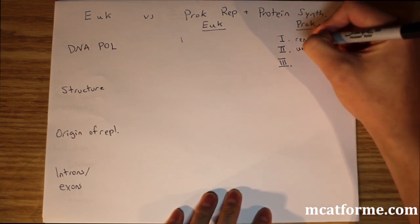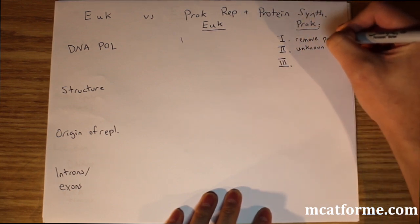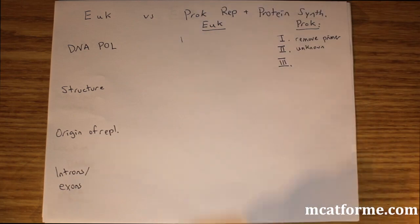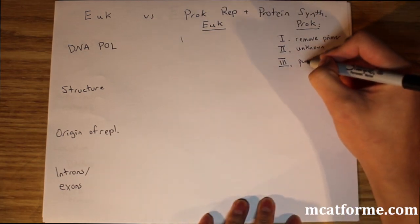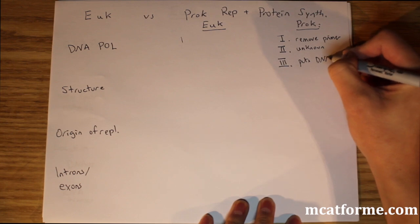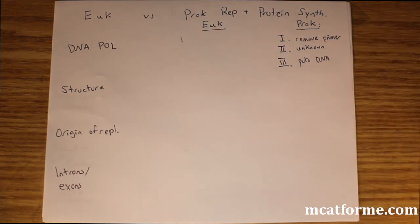DNA polymerase I removes primers, and DNA polymerase III puts down the DNA. It lays the track down and does the basic function.